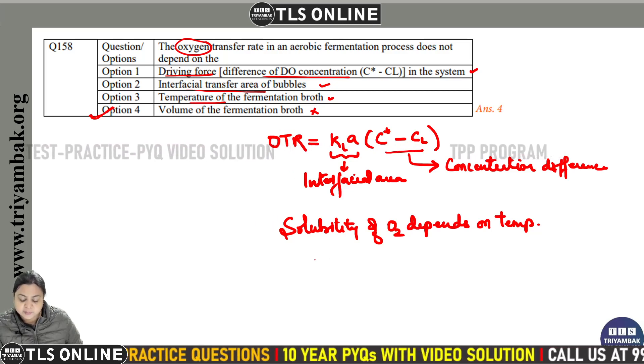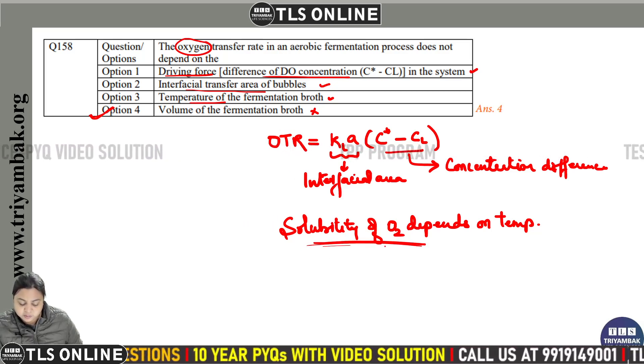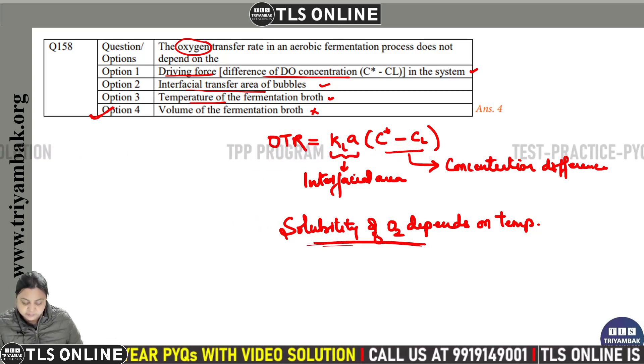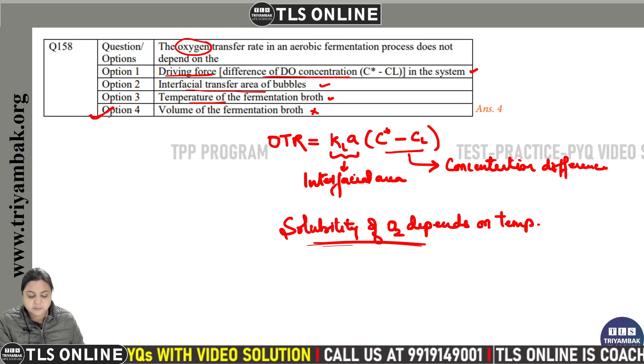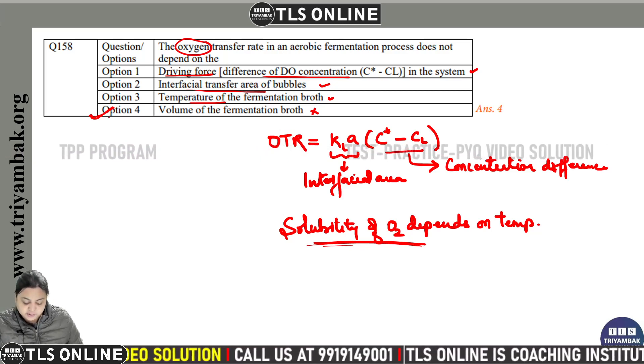The temperature affects the solubility of oxygen. So the option will be 4 — that is, volume of the fermentation broth.